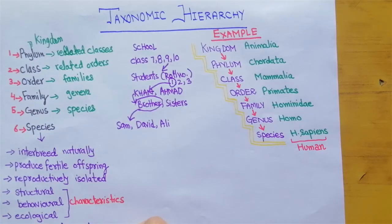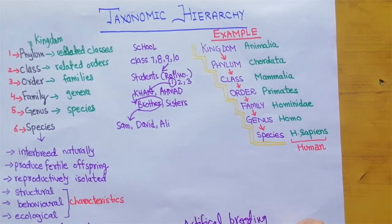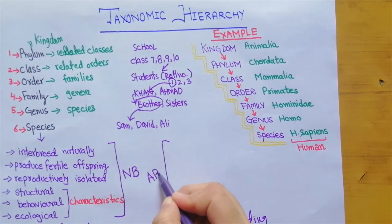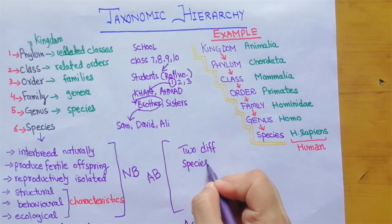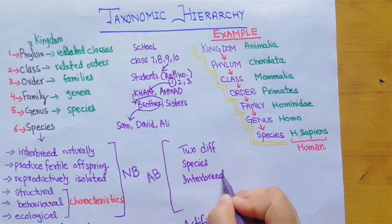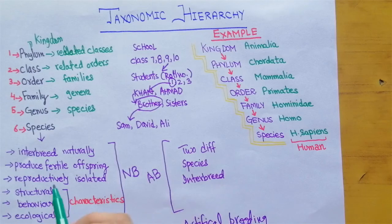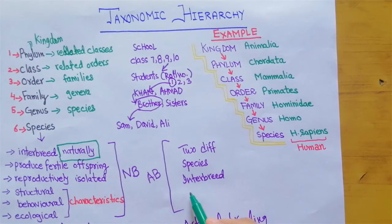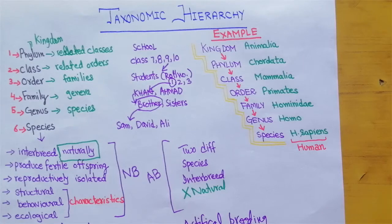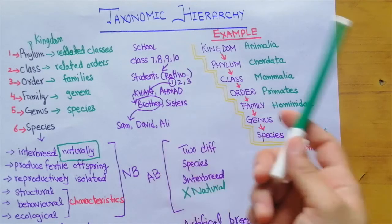We have also heard about artificial breeding. In natural breeding, organisms of the same species interbreed naturally. In artificial breeding, two different species can be crossbred, but this process is not natural — it is human-made. Humans cross-breed two different types of species to produce a new breed. That covers taxonomic hierarchy.